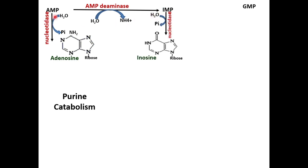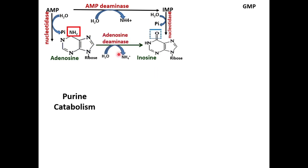IMP, similar to AMP, forms inosine with the help of nucleotidase — again with removal of phosphate. Adenosine can also remove ammonia via adenosine deaminase, releasing an ammonium ion. Note: in the AMP pathway it was AMP-deaminase, whereas here it is adenosine deaminase.